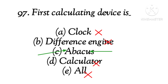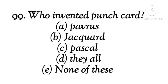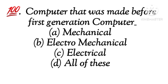Question 97: The first mechanical calculator was invented by. The right answer is C. Question 99: Who invented the punch card? The right answer is E. Question 100: Computer that was made before the first generation computer. The right answer is C.